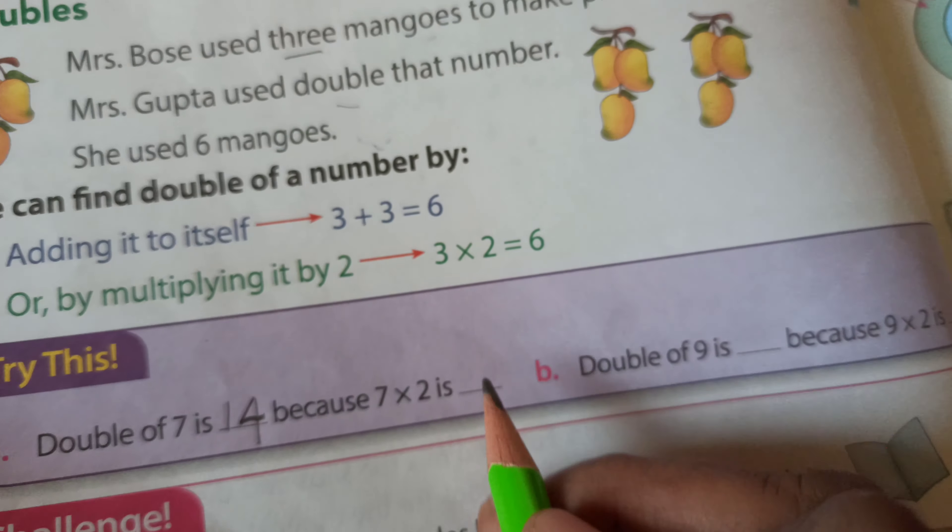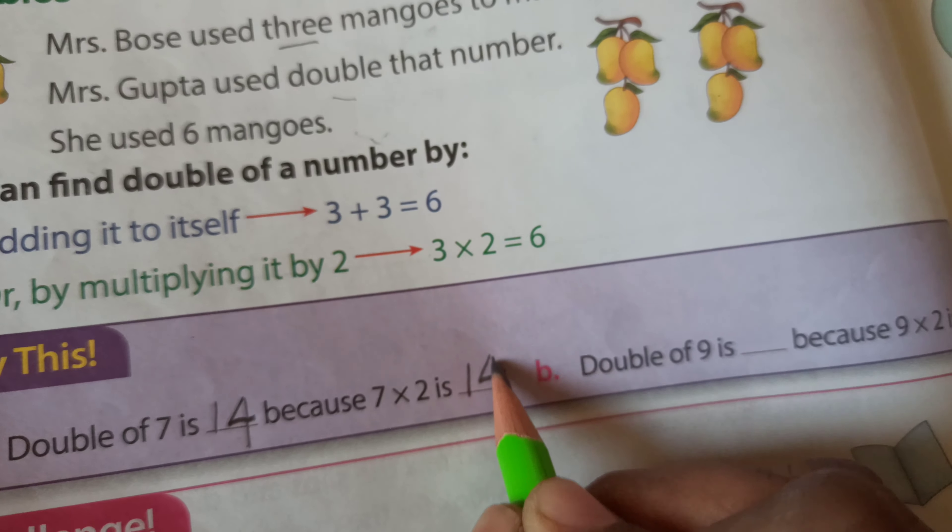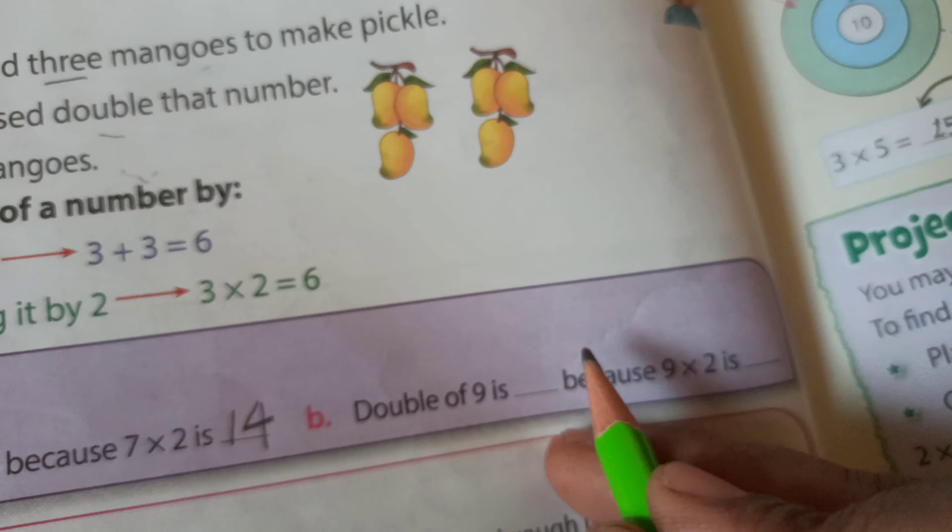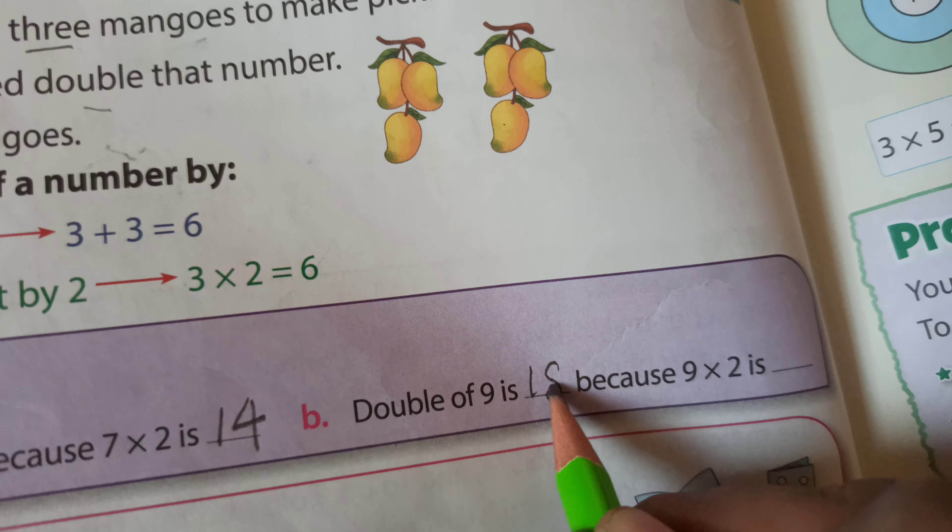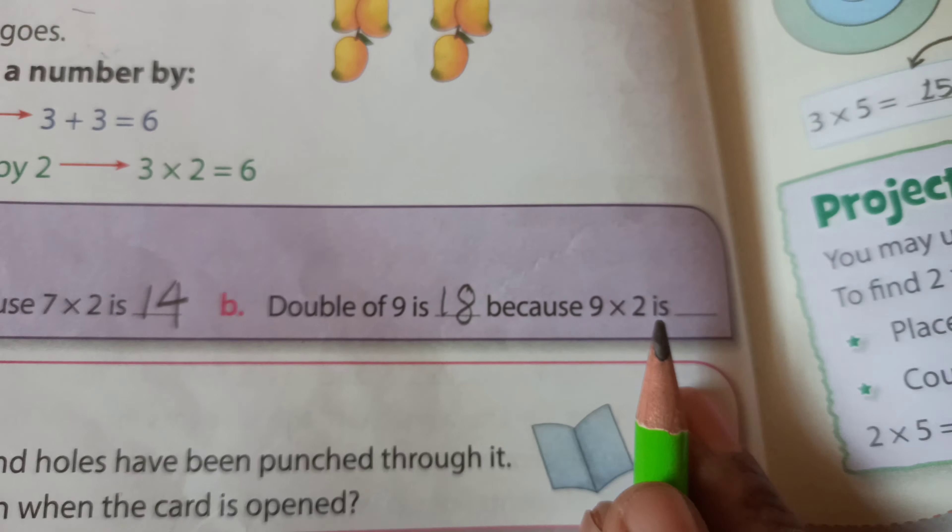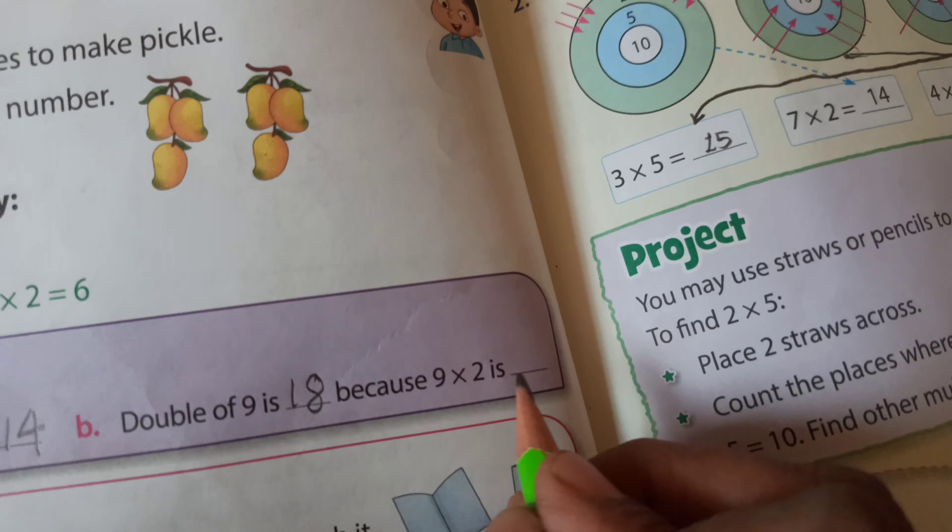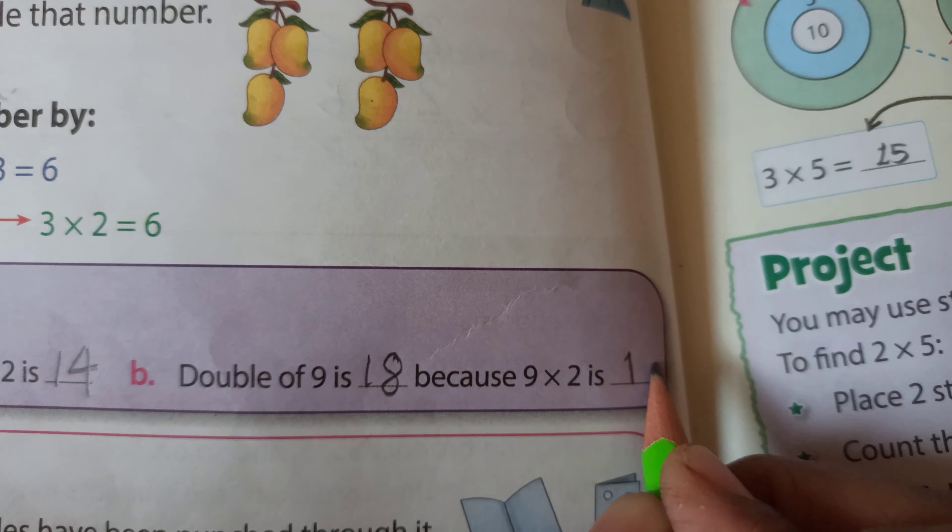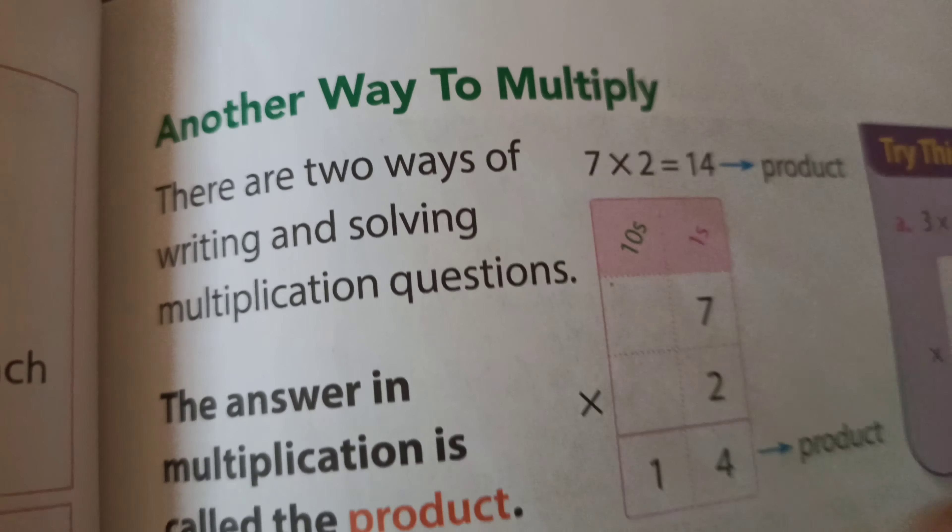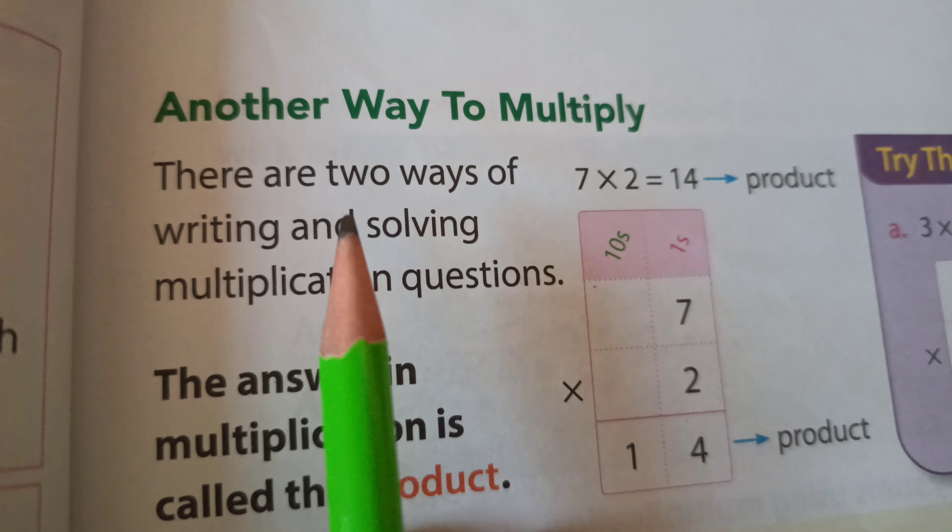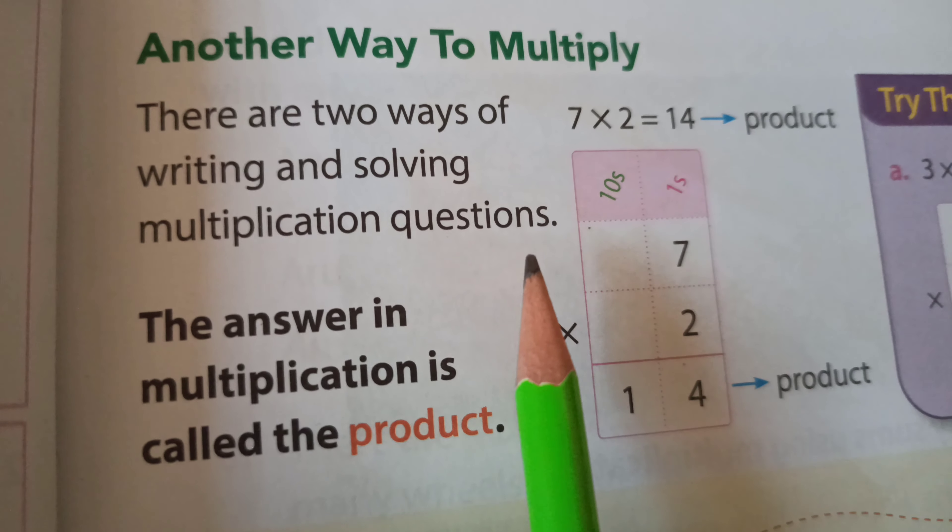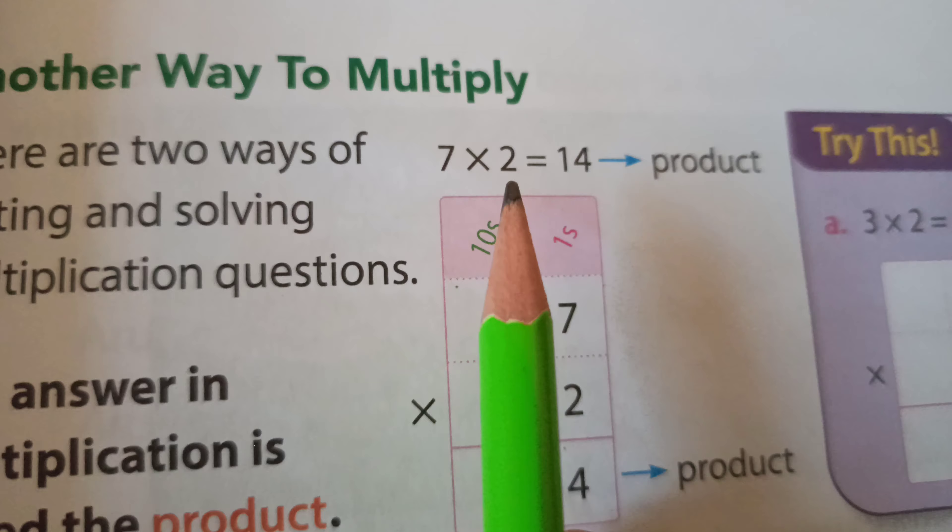Then, Try This section. First one: double of 7 is 14, because 7 plus 7 equals 14, or 7 multiplied by 2 equals 14. B: double of 9 is 18, because 9 plus 9 equals 18, or 9 multiplied by 2 equals 18.